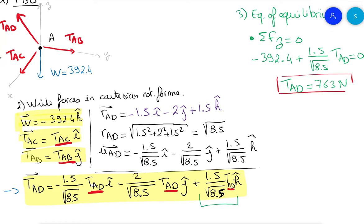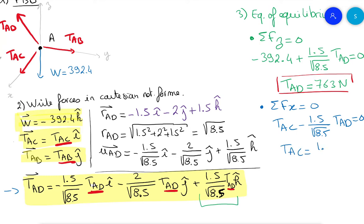Now we can use either the x or y equation. Sum of forces on X equals zero: TAC on the positive i-hat, minus 1.5 divided by the square root of 8.5 times TAD equals zero. So TAC equals 1.5 divided by the square root of 8.5 times TAD. Substituting TAD equals 763 newtons, we get TAC equals 392.4 newtons.